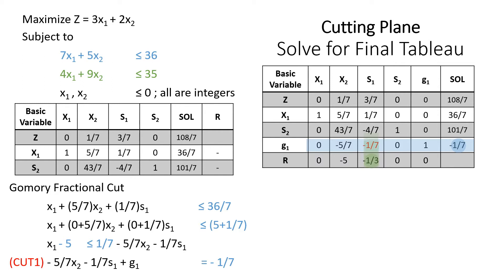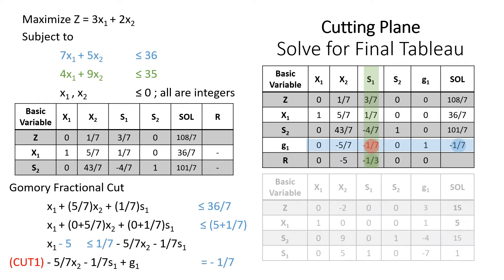Look at the absolute value of ratio test and choose the smallest value. In this case, we have 1 over 3, then g sub 1 will be our pivot row, x sub 1 is our pivot column, and we have negative 1 over 7 as our pivot element. Then, solve the tableau the same method we used earlier in getting the optimal value or optimal tableau.